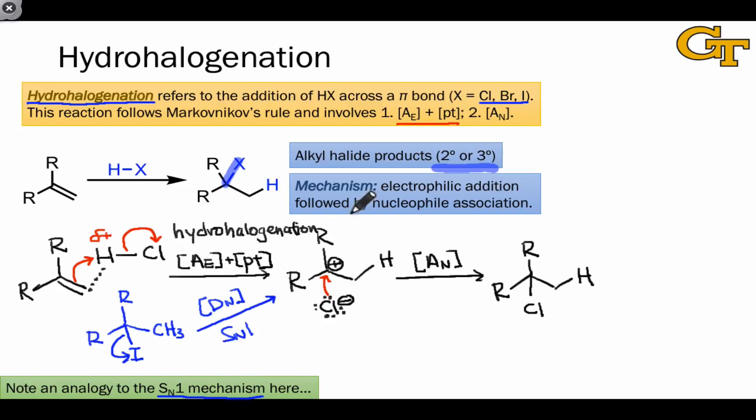And carbocation stability explains why the alkyl halide products of hydrohalogenation must be either secondary or tertiary. Because the halide anion coordinates to the carbocation, secondary or tertiary alkyl halide products imply a secondary or tertiary carbocation. Because primary carbocations don't form, we can't arrive at a primary alkyl halide product using hydrohalogenation.